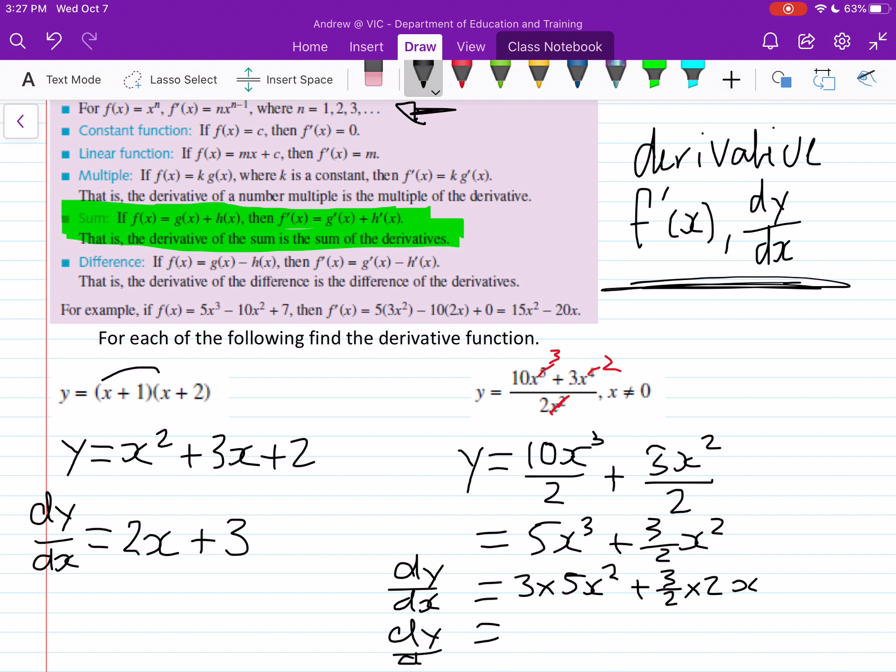So this becomes 15x squared plus 3 over 2 times 2, which just leaves 3, so 3x. And that is your derivative function.